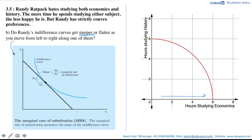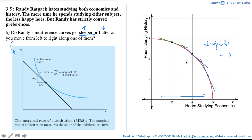If we are moving from left to right, is the slope of the graph increasing or decreasing? If it is increasing, we say the curve is becoming steeper. If the slope is decreasing as you move from left to right, we say it is becoming flatter. Let's calculate the slope at different points by drawing tangents. At the first point, we have a green tangent. Moving to the right, at the next point we have a purple tangent which is steeper than the green tangent. Drawing a tangent at yet another point gives a blue tangent, which is steeper than the purple tangent. This means the slope is increasing as we move from left to right. Thus, the indifference curve gets steeper and steeper as you move from left to right along one of them. The answer is steeper.